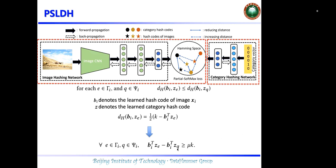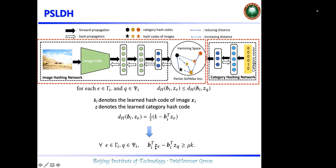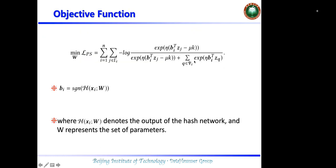Thus, in order to achieve this goal, we propose a novel partial softmax loss as the objective function, which can be formulated as shown. It can be proved that by minimizing this objective function, the learned hash code B_i can satisfy the inequality. Thus, we utilize this objective function to optimize our hashing model.